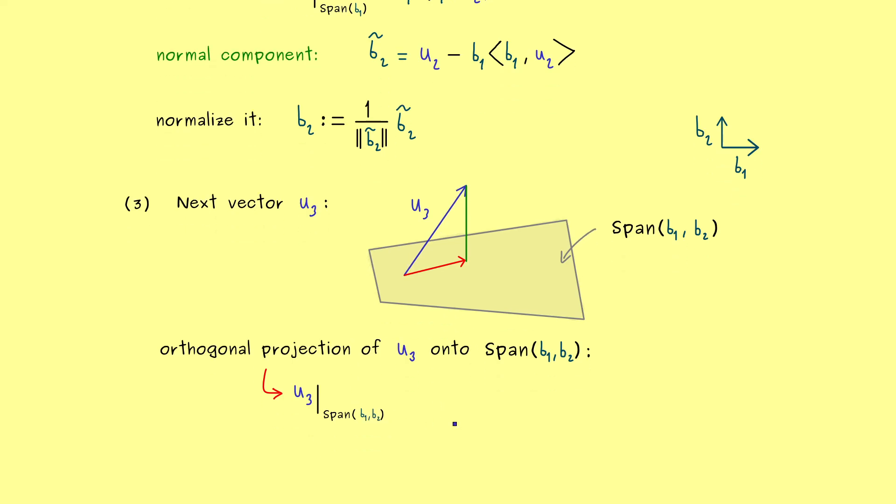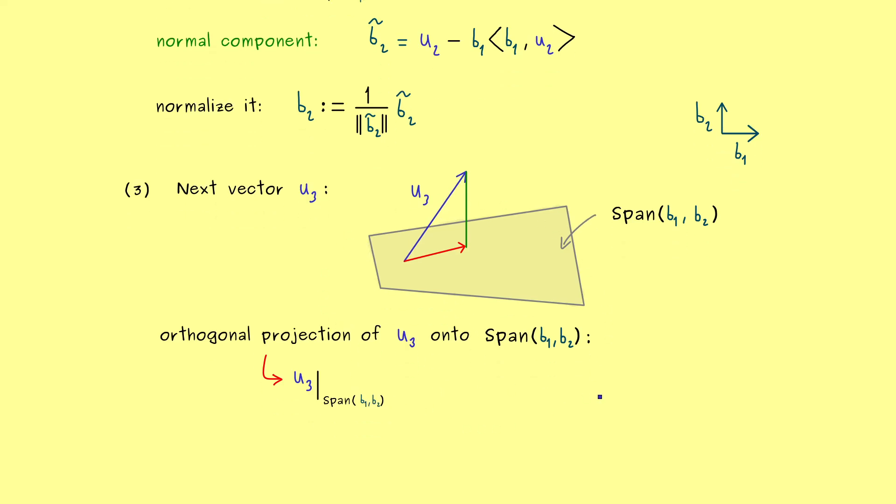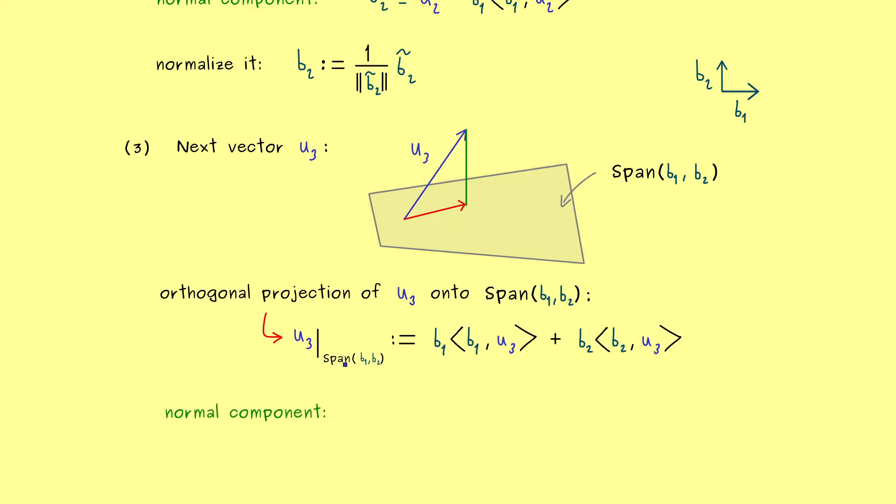Therefore the only question is, how do we calculate the orthogonal projection in this case. And there you should recall that having an ONB makes this calculation really easy. It's just projecting u₃ to the first basis vector plus projecting u₃ to the second basis vector. So this formula is really nice, simply because we already have an ONB here. But we have the same as before, actually we want to have the normal component.